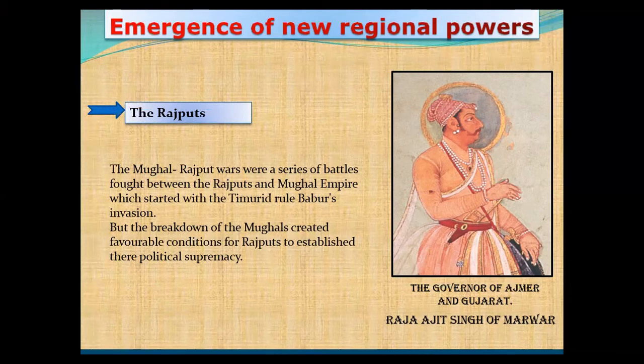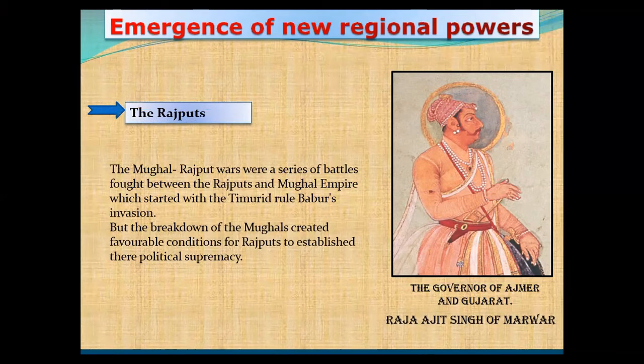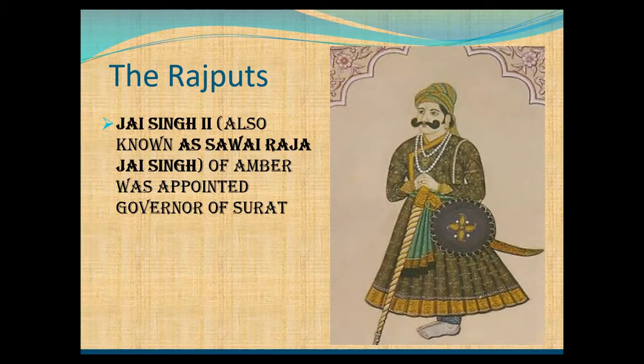Raja Ajit Singh of Malwa functioned as the governor of Ajmer and Gujarat, and Jai Singh II of Amber was appointed as governor. However, this revival of Rajput power was temporary, as the Maratha campaigns into Rajasthan led to the decline of the Rajputs.